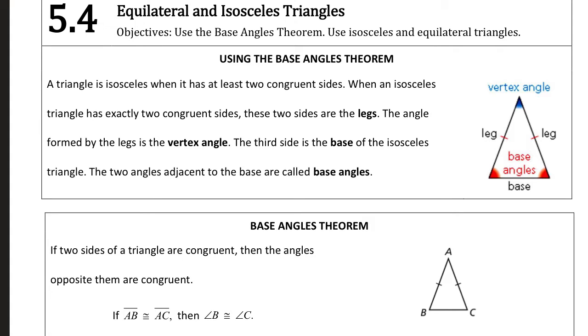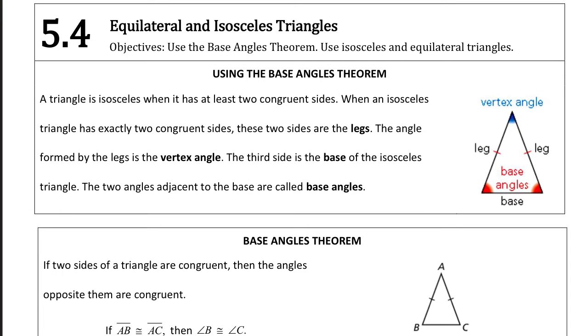Okay, so Unit 5, Lesson 4. In this lesson, we're going to take a little bit of a break from some of the congruence. We're going to talk about equilateral and isosceles triangles. We should already know equilateral triangles are triangles with all three sides being the same. Isosceles triangles are a little different.